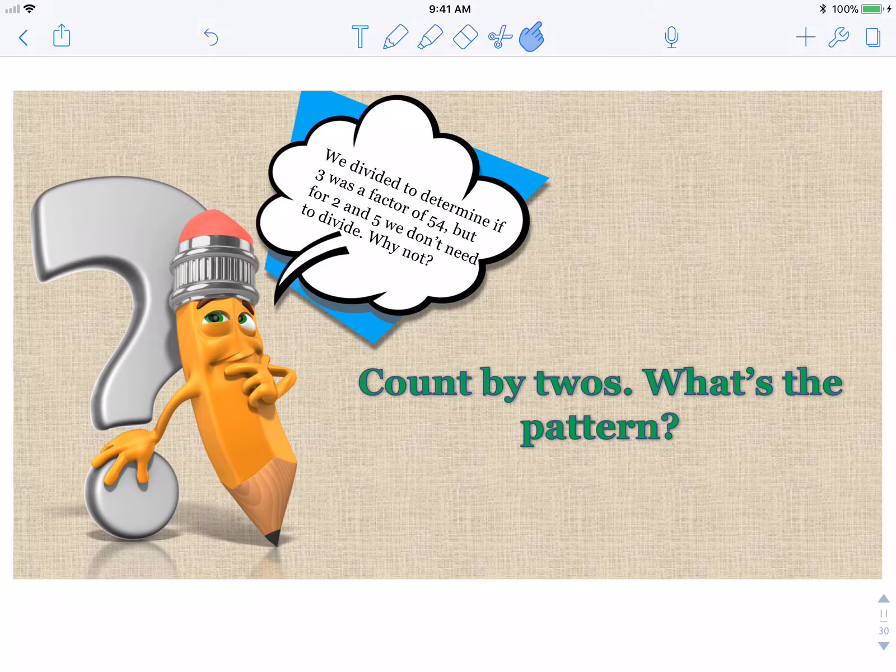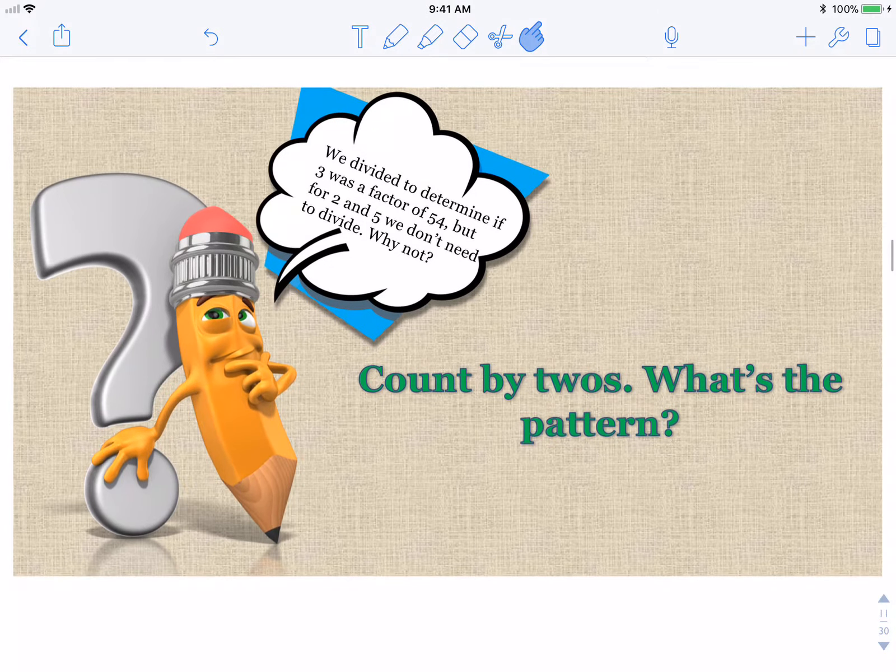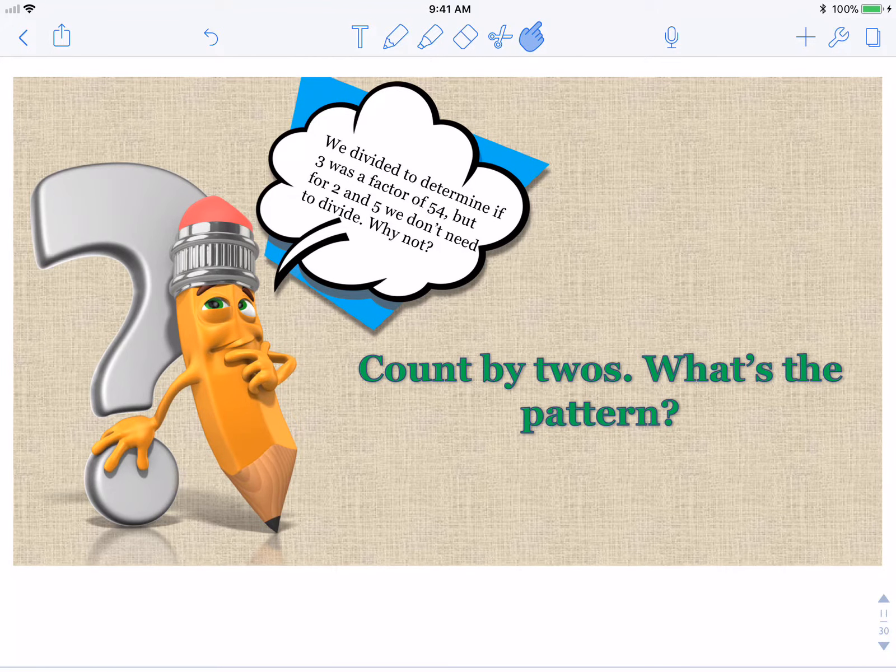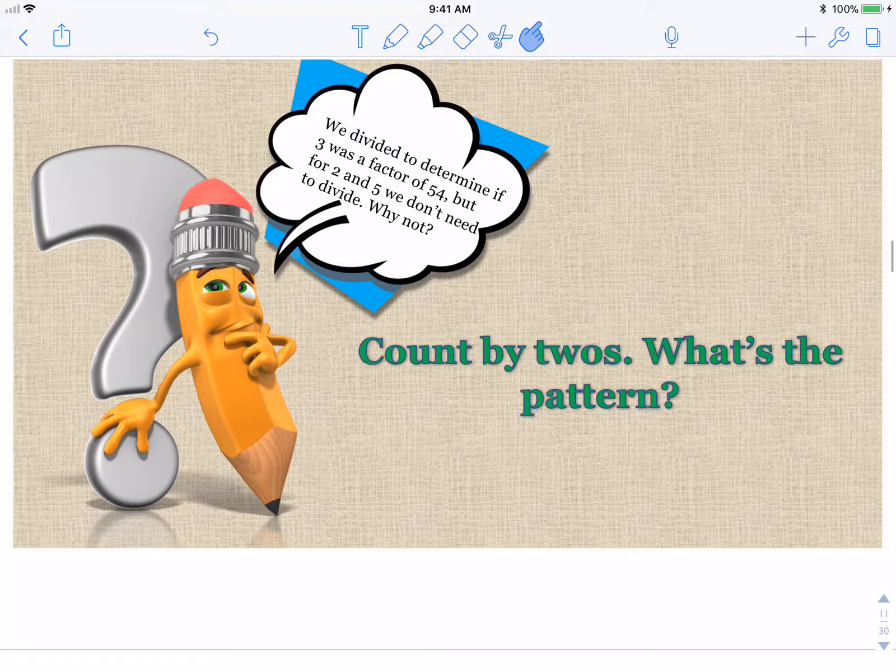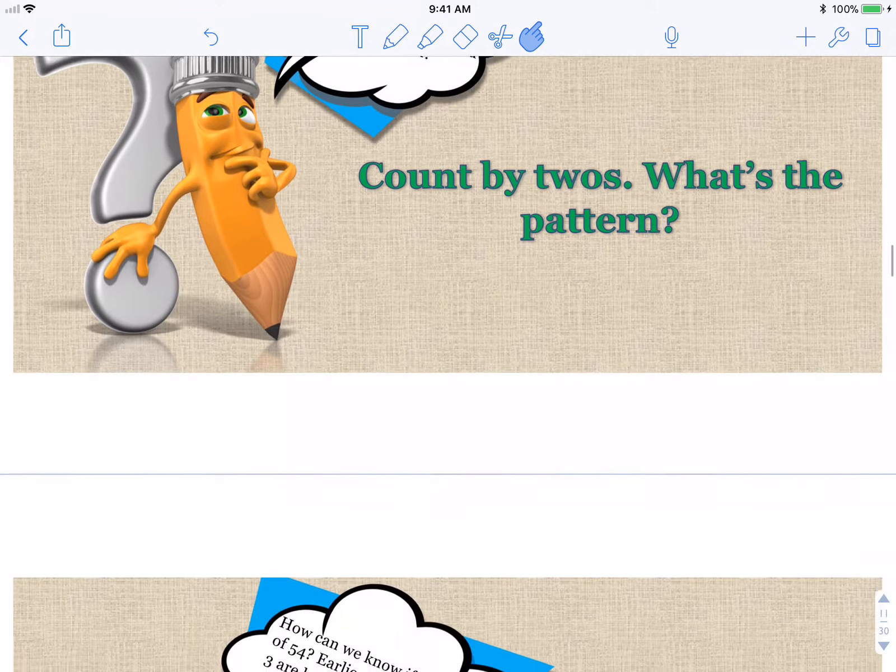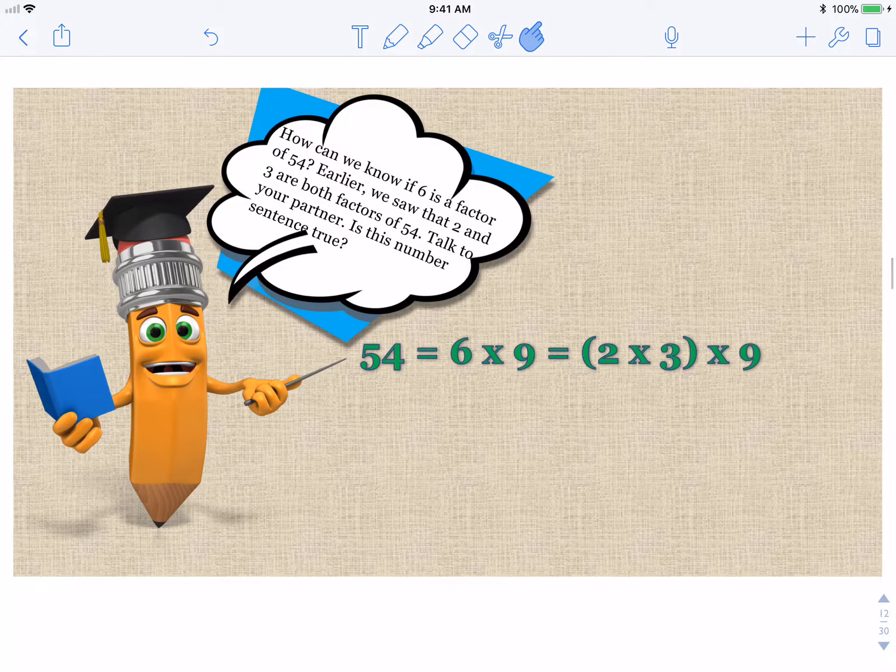We divided to determine if 3 was a factor of 54. But for 2 and 5, we don't need to divide. Why or why not? Count by 2's. What's the pattern? 2, 4, 6, 8, 10. All numbers that are divisible by 2 are even numbers. And we did talk about 3. They, I don't think that they wanted me to show you that rule but I still showed it to you and I hope you use it because it will save you a lot of time when you're working with factors.